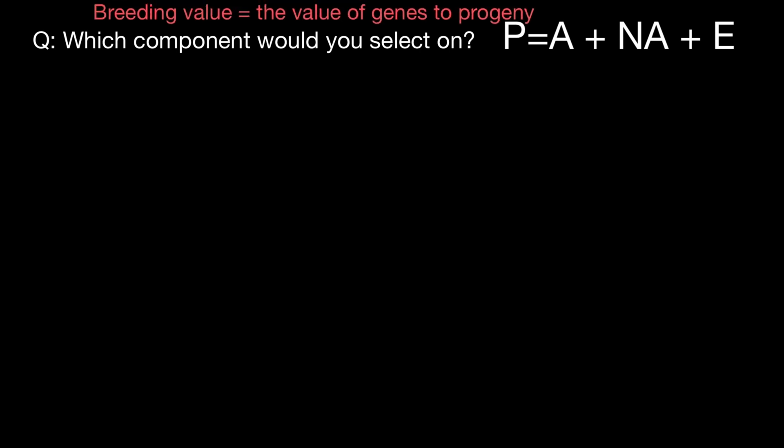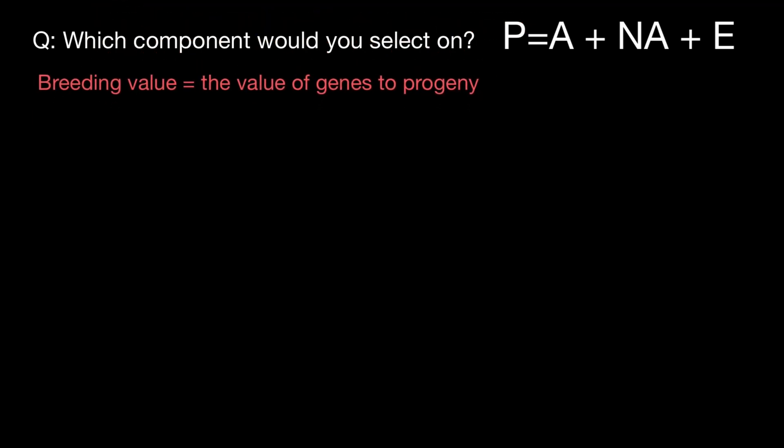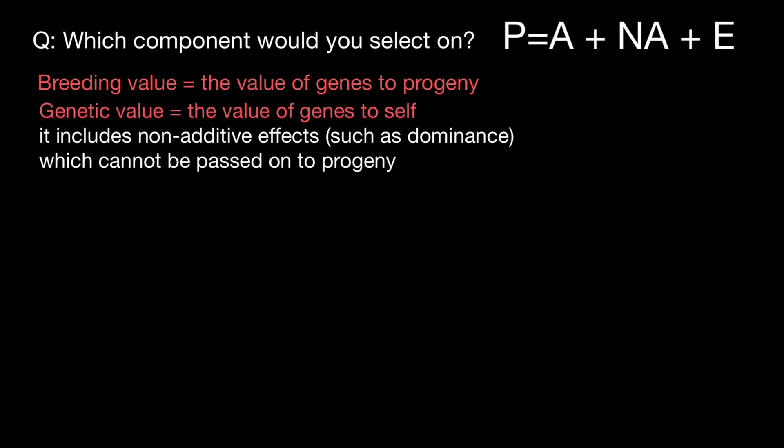In short, the breeding value is going to be the value of the genes to a progeny. And the genetic value is going to be the value of genes to self. In other words, it includes non-additive effects such as dominance, which cannot be passed on to the progeny. So let's talk in more detail about each term here.